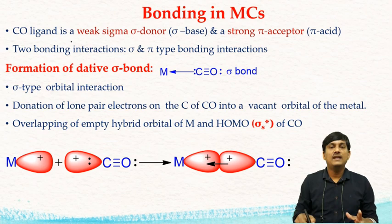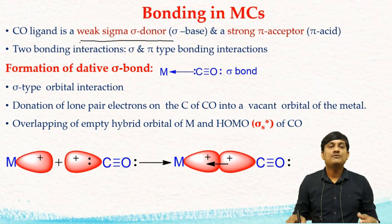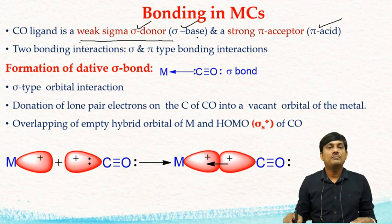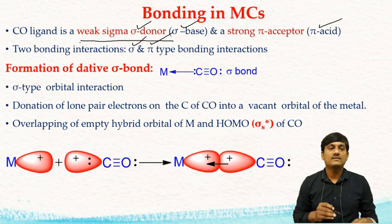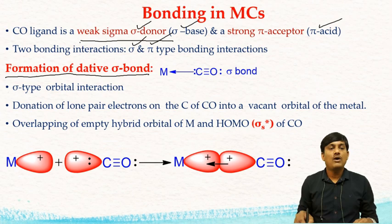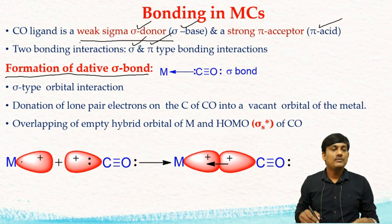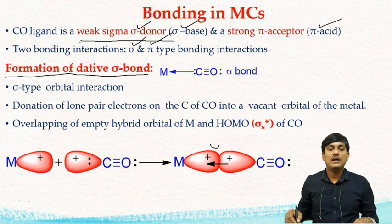In bonding in metal carbonyls, the CO ligand is a weak sigma donor — it donates electrons and forms a sigma bond, and is also called a sigma base. It is also a strong pi acceptor, or pi acid. In sigma-type bonding interaction, there is formation of a dative bond: the lone pair of electrons from CO is donated to an empty orbital of the metal, with head-on overlap between the empty metal orbital and the HOMO of CO.